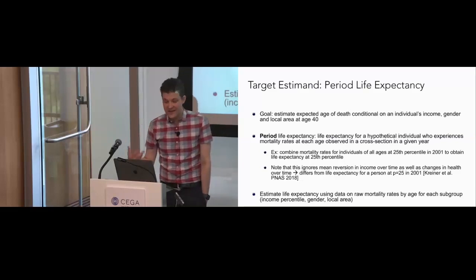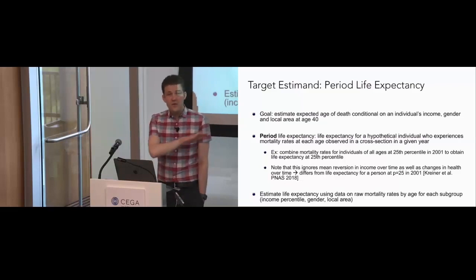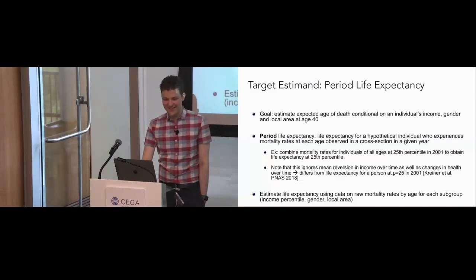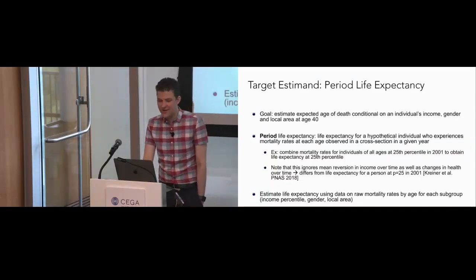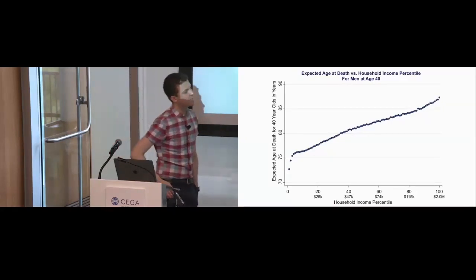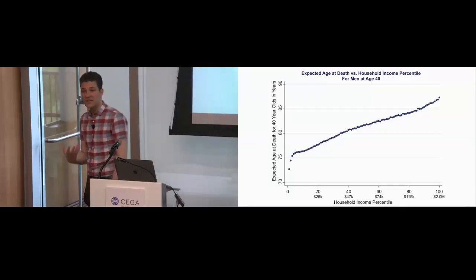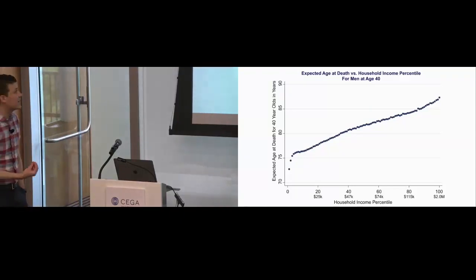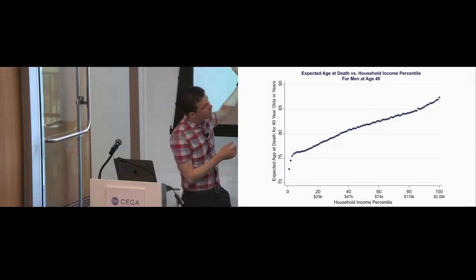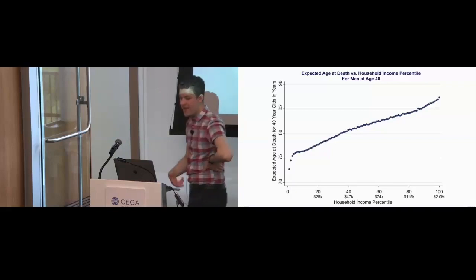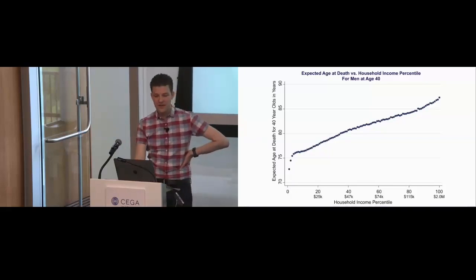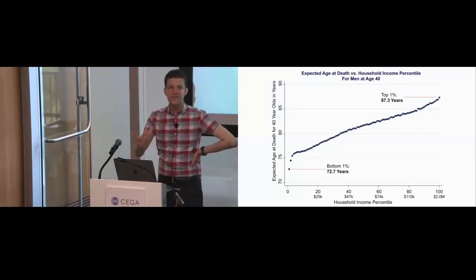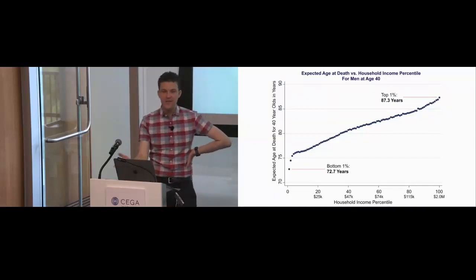We estimate life expectancy using raw mortality rates by age for each subgroup. Here I'm plotting 100 income percentiles — we can only measure people with positive income, as we're using tax data. Starting at age 40, looking at men: in the top 1%, life expectancy is 87 years; in the bottom 1%, it's 72 years. That's a 15-year gap in life expectancy between the richest and the poorest Americans in the 2001–2014 period.